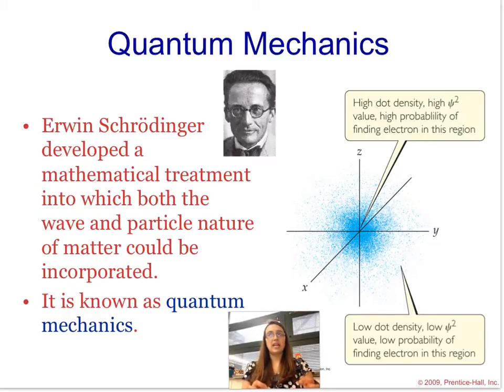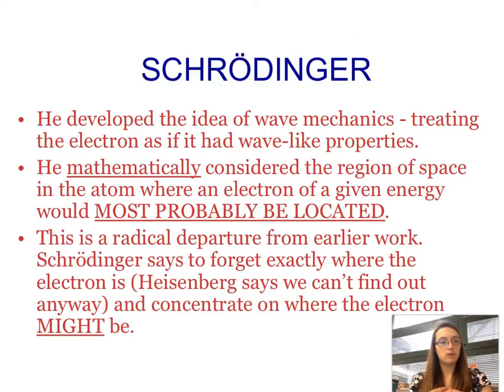And quantum mechanics is a huge field in physics, and we're not going to cover many physics topics at all. So if you really enjoy quantum mechanics, you can take another class once you get to college. So Schrödinger developed this idea of wave mechanics, and that's the big basis for quantum mechanics. And what he did is he just treated the electron as if it were a wave.